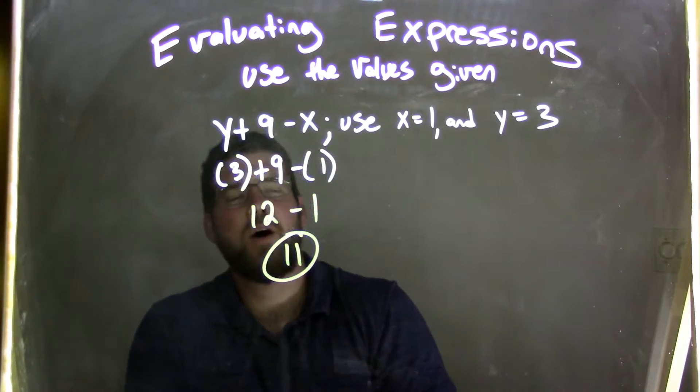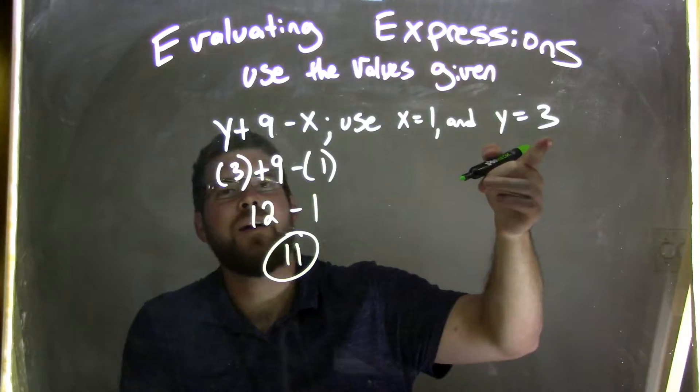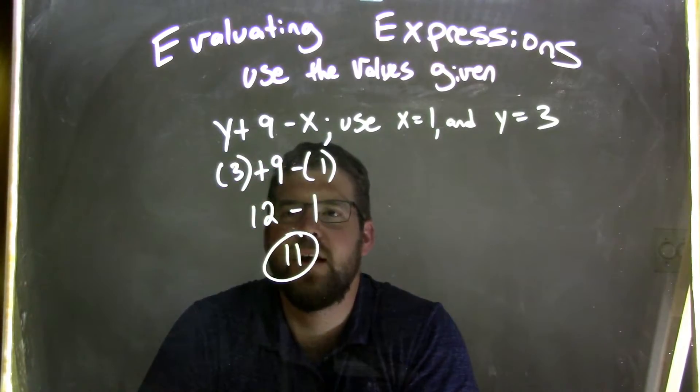So, again, we simplify, or we substitute first, substitute first. The y is 3, so 3 goes in for y, and 1 is x. Then, from there, we simplify 3 plus 9 is 12. We subtract 1, and we get 11.